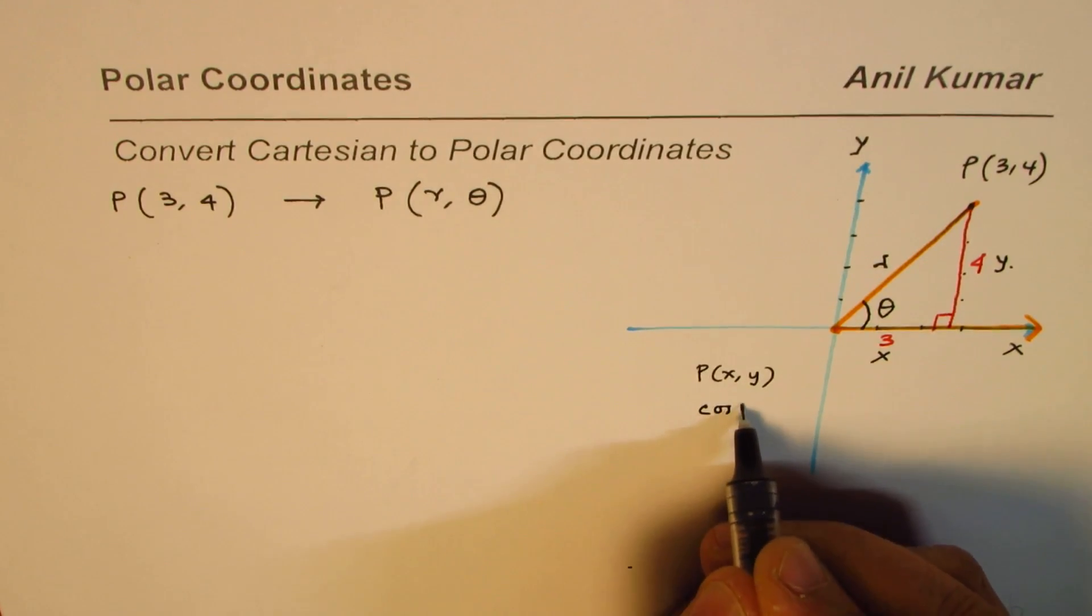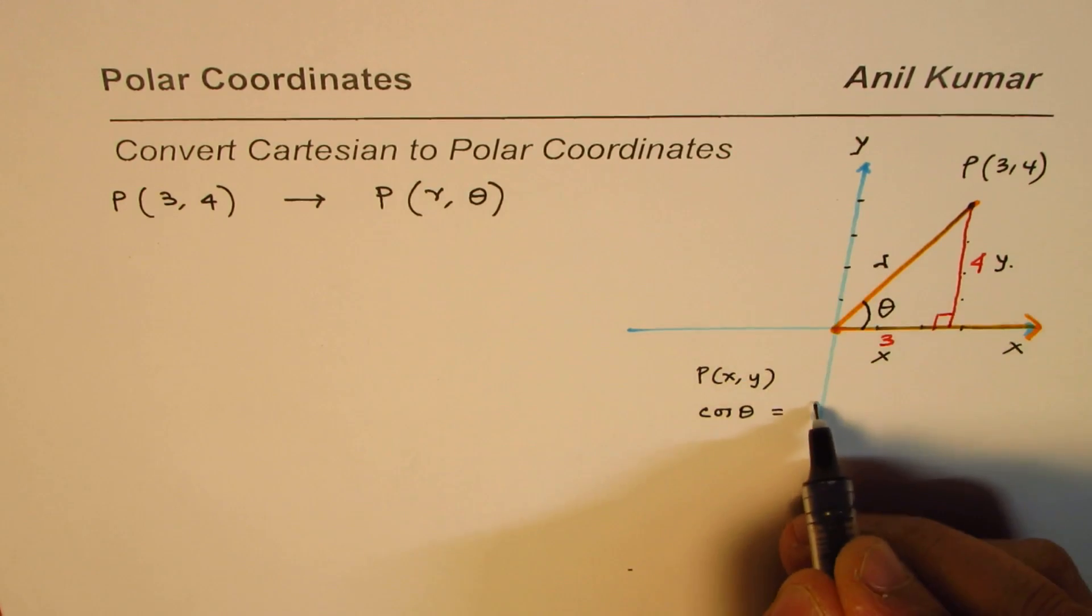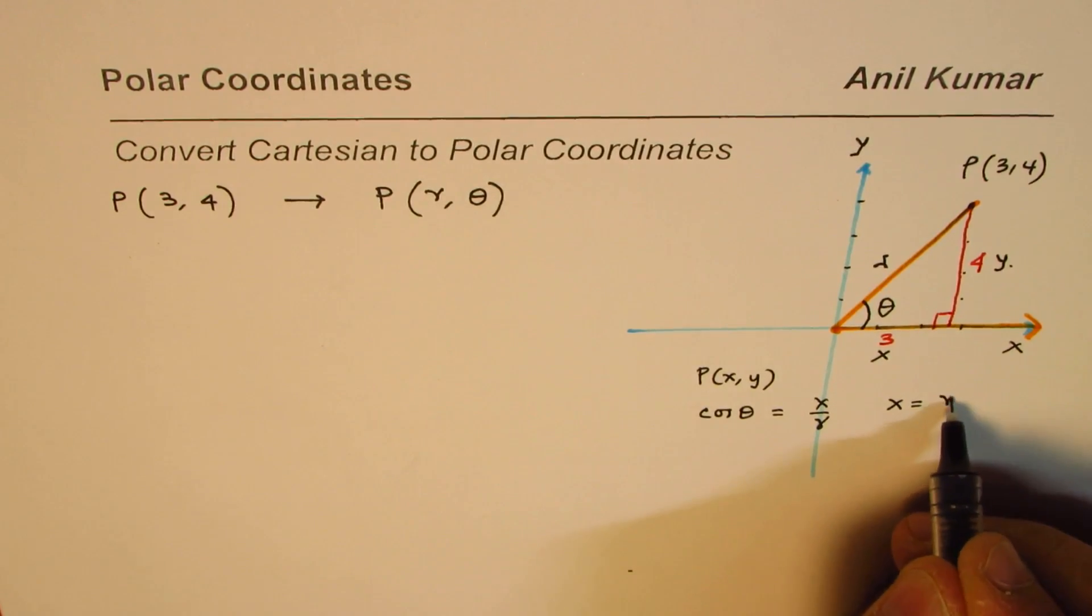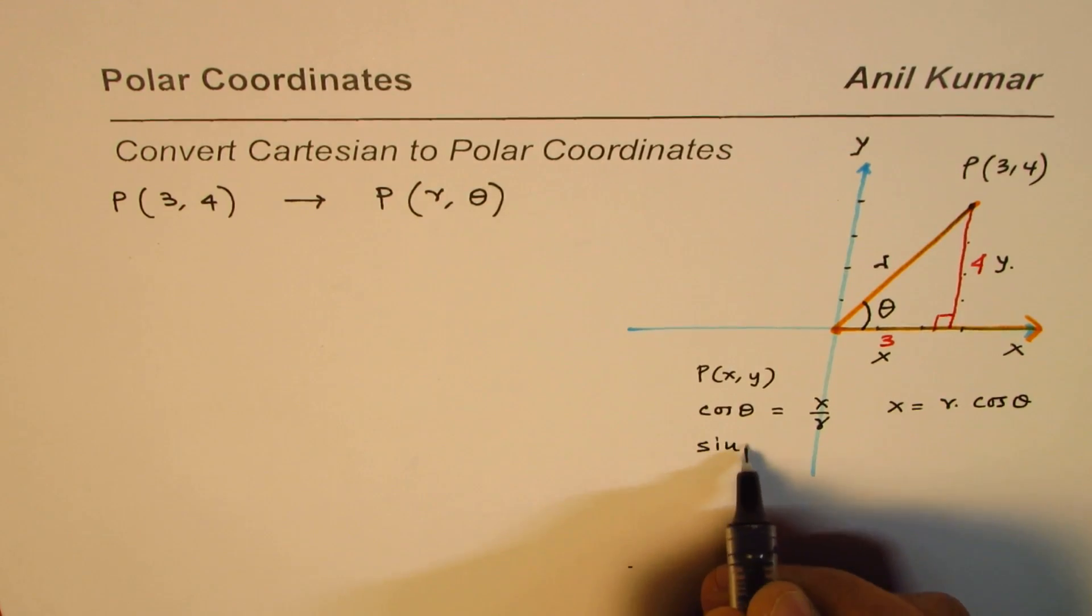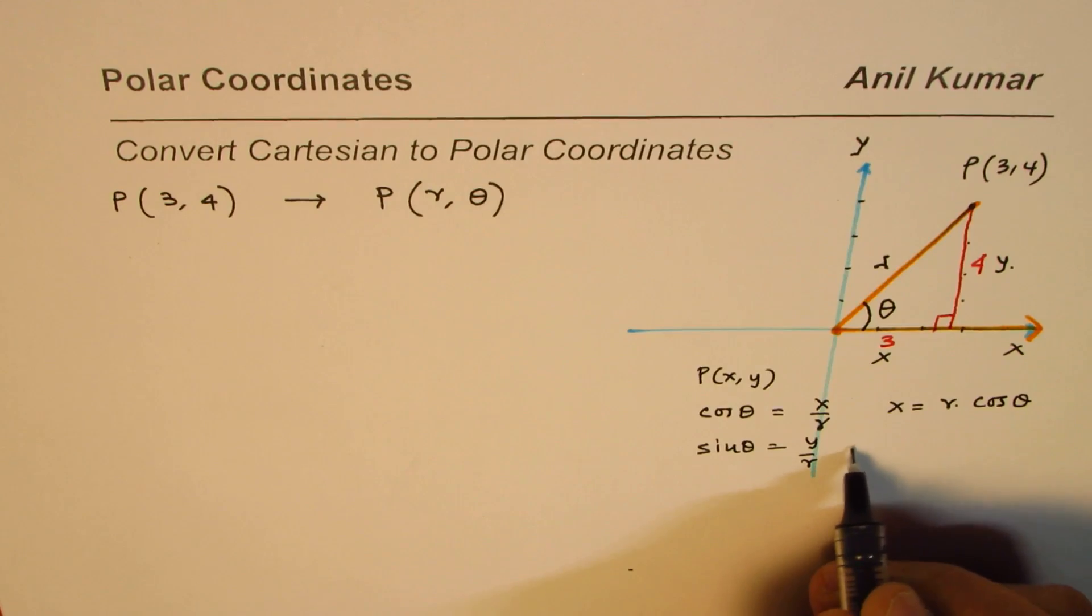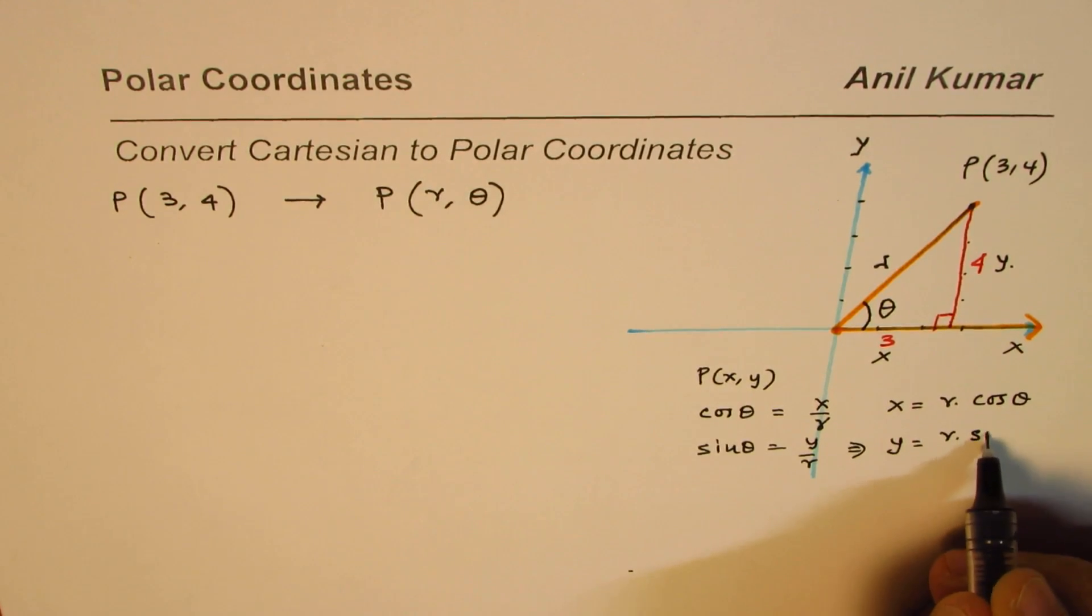So in that case, we can write cos of theta as equals to x over r. So that gives me the value of x as equals to r times cos theta. And the value of sine theta is equals to y over r. That means that the value of y could be written as r times sine theta.